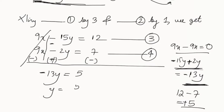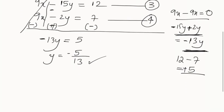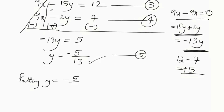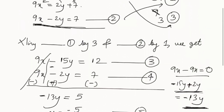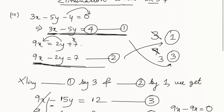On the right side: 12 minus 7 equals 5. So minus 13y equals 5, which gives us y equals 5 divided by minus 13, that is y equals minus 5 by 13. That is the value of y.